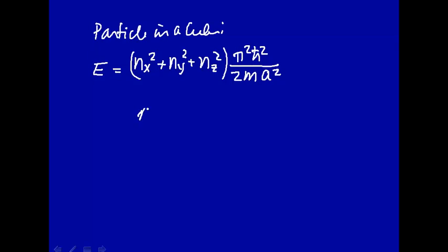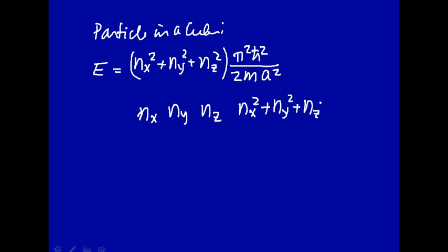To show that, let's look at various combinations of the quantum numbers nx, ny, and nz. These are the three quantum numbers you have to specify in order to specify the state of a particle in a cube. Then let's look at the sum of the squares: nx² + ny² + nz². Let's make a little table here.